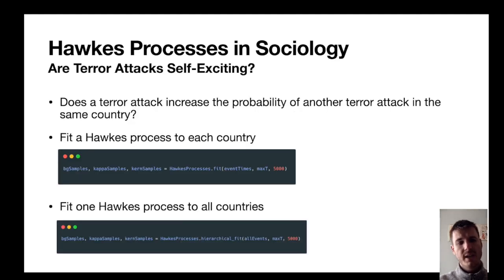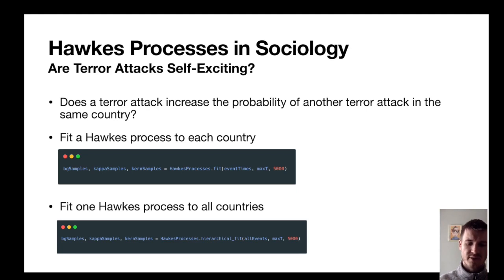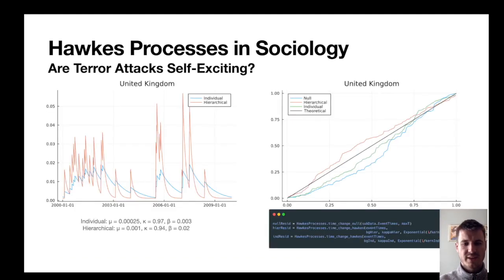What about sociology? In a chapter of my PhD I was looking at whether terror attacks are self-exciting — essentially trying to understand whether an individual terror attack increases the probability of another attack in the same country. With multiple countries in the dataset, we have two choices: fit an individual Hawkes process to each country with their own parameters, or fit one Hawkes process to all countries sharing parameters — one background rate, kappa, and kernel. This is achieved using the hierarchical fit from my package. Looking at the United Kingdom as an example, both models produce slightly different results, but the overall conclusion with kappa higher than 0.9 is that these terror attacks are very self-exciting.